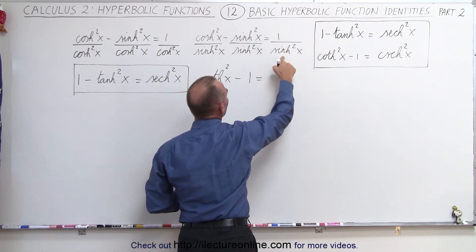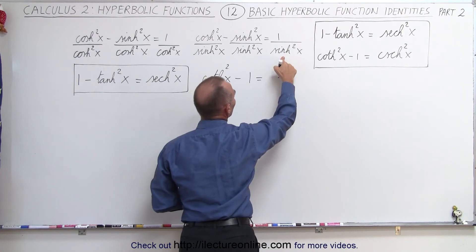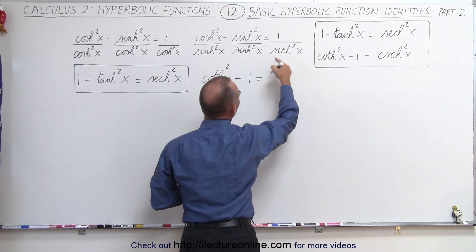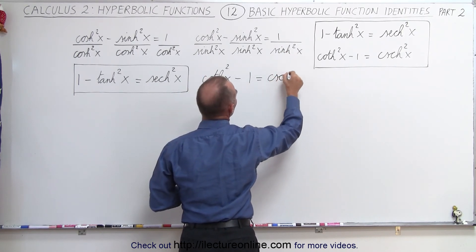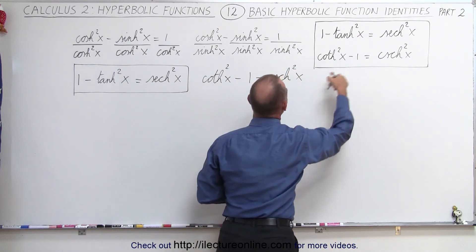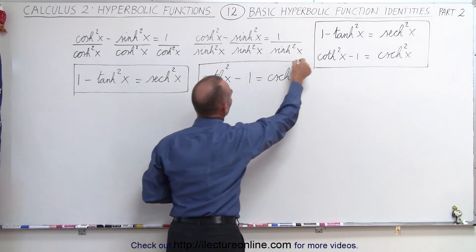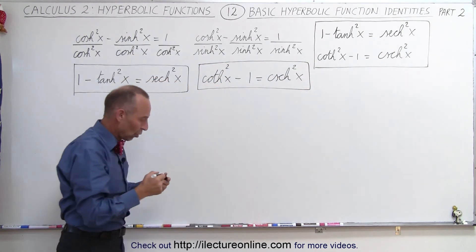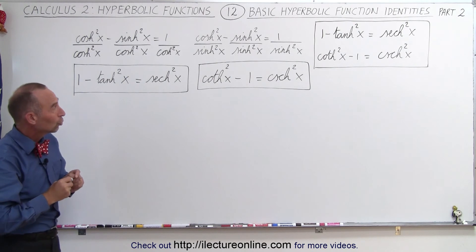equals, and the inverse of the hyperbolic sine becomes the cosecant, hyperbolic cosecant. So cosecant hyperbolic squared of x. And notice, that's our second identity, and so it's actually fairly simplistic to show that those two identities are true,